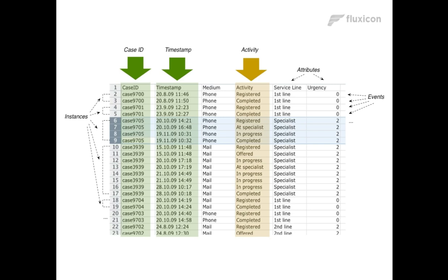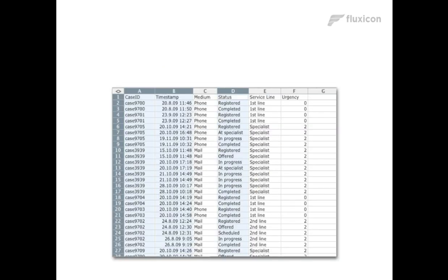There are a number of additional attributes — often we have many additional attributes that are important for the analysis, providing context information. We can use them for analysis and filtering. But as the basic process mining requirement, there are only these three. So it's very simple: if you look at your own data, you have to think about what's my case ID, what's my activity, and what's my timestamp. You're looking for timestamps for the relevant activities in your own IT system.